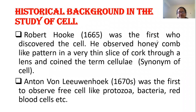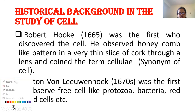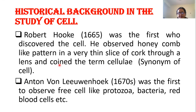Now, first we have to understand the historical background about the study of the cell — how the cell was discovered and what are the different contributions done by various scientists. The first name is Robert Hooke. In 1665, he was the first who discovered the cell. He observed a honeycomb-like pattern in a very thin slice of cork, and then coined the term 'cellulae,' which is a synonym for cell.